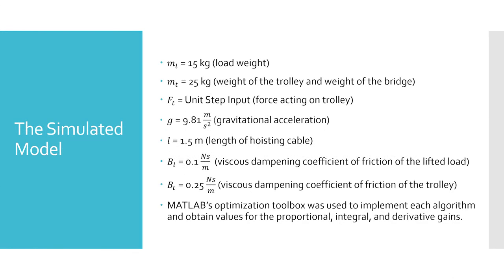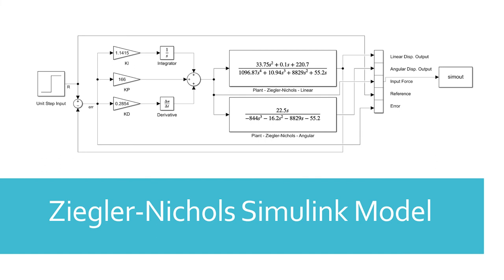The simulated model used a load mass of 15 kilograms, a combined trolley and bridge mass of 25 kilograms, a unit step input for the force on the trolley, a gravitational acceleration of 9.81 meters per second squared, a cable length of 1.5 meters, a viscous damping coefficient of friction on the lifted load of 0.1 newton seconds per meter, and a viscous damping coefficient of friction on the trolley of 0.25 newton seconds per meter. MATLAB's optimization toolbox was used to implement each algorithm and obtain the various gains for each Simulink model. The input to all Simulink models consists of a unit step input of the force on the trolley while the horizontal displacement of the trolley is controlled using a PID controller. The angular displacement of the load is monitored.